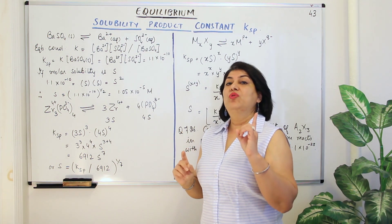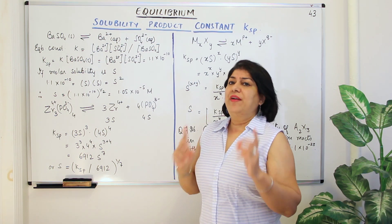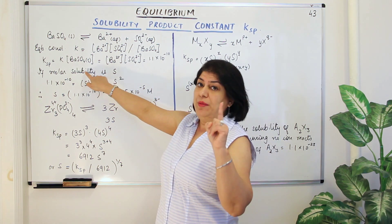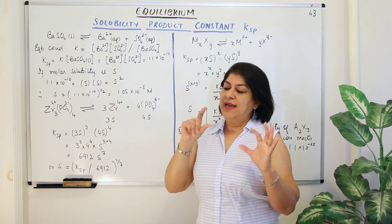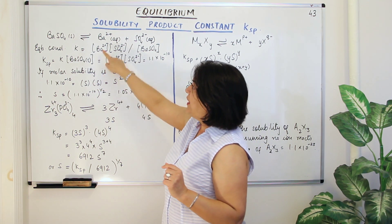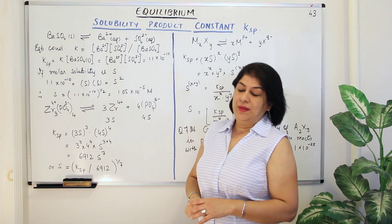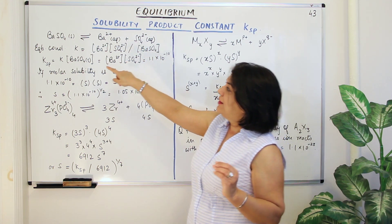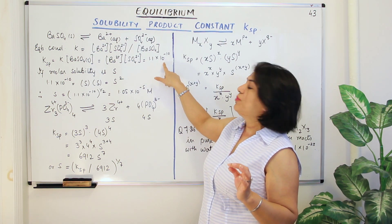Let us assume that one mole of barium sulphate — or any salt we are taking — is dissociating. We assume that the molar solubility for one mole of that salt is S. Taking the number of moles to be S for each ion, we can substitute S in this equation. For barium sulphate, the value of the solubility product constant KSP is 1.1 × 10⁻¹⁰.